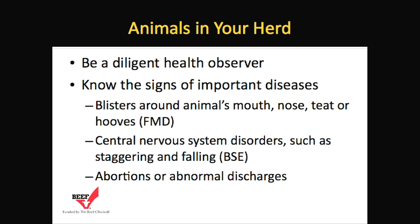Be a diligent observer of cattle for signs of disease. Know the signs for animals that are getting sick, like droopy ears, snotty noses, being lethargic, being lame, or animals that stop eating. Also know the signs of important foreign animal diseases, which include blisters around the animal's mouth, nose, teats, or hooves — like foot and mouth disease — or central nervous system disorders such as staggering and falling, which might indicate BSE. Abortions or abnormal discharges might be indicative of some of the venereal diseases.